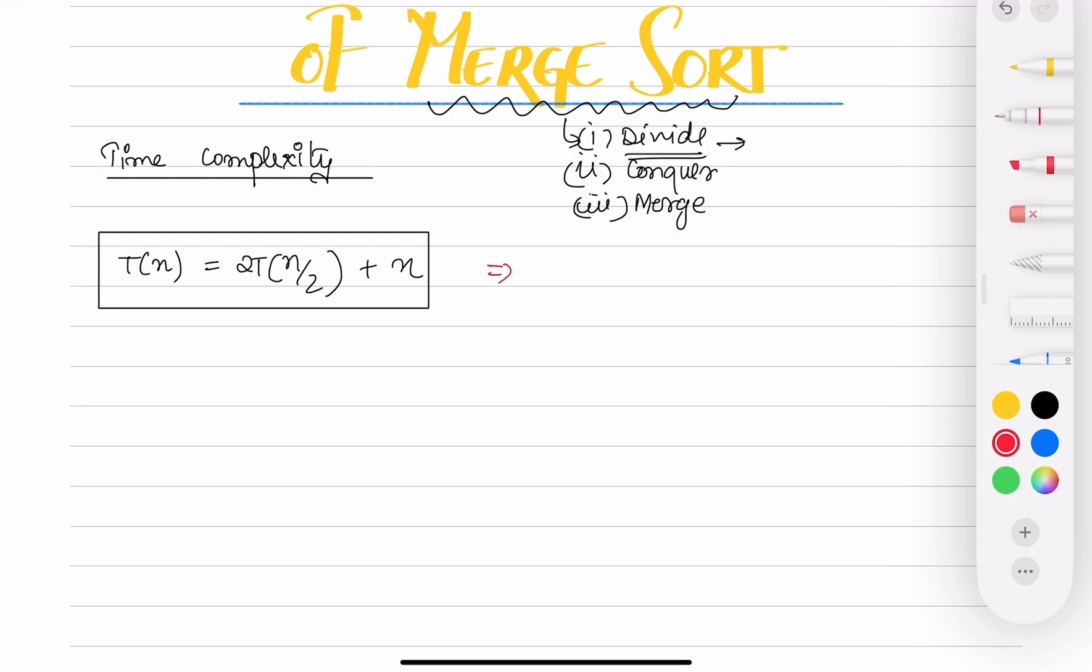If you remember how we derive time complexity, we write T(n). This 2 is from dividing the array into 2 equal halves. This n/2 is for equal elements, so when you divide the array you get equal elements.